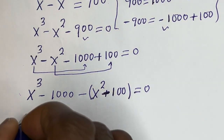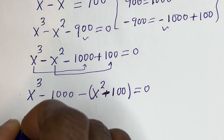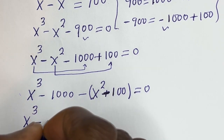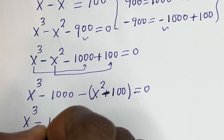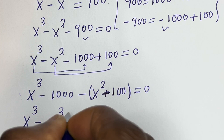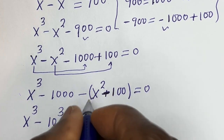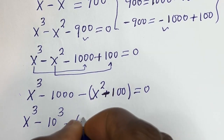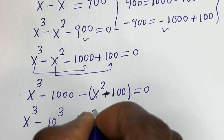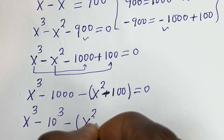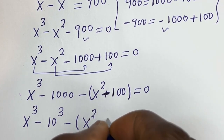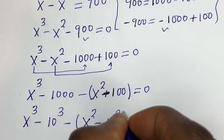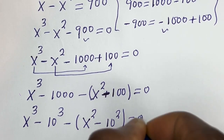Then s to the power of 3 minus 1000 can be written as s cubed minus 10 to the power of 3, and s squared minus 100 is s squared minus 10 squared, all equal to 0.